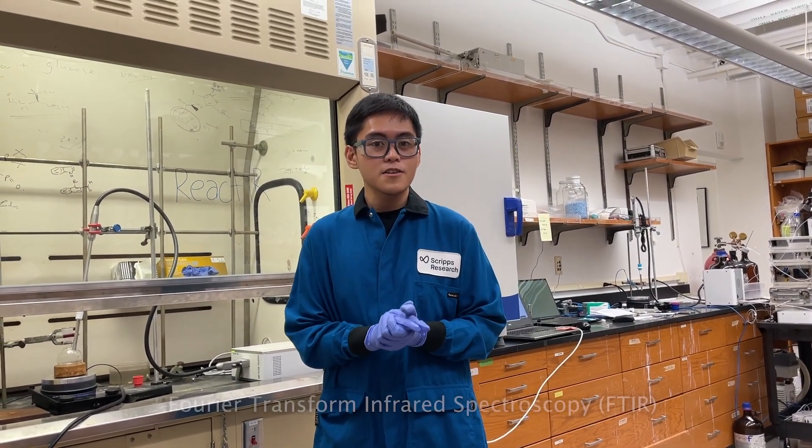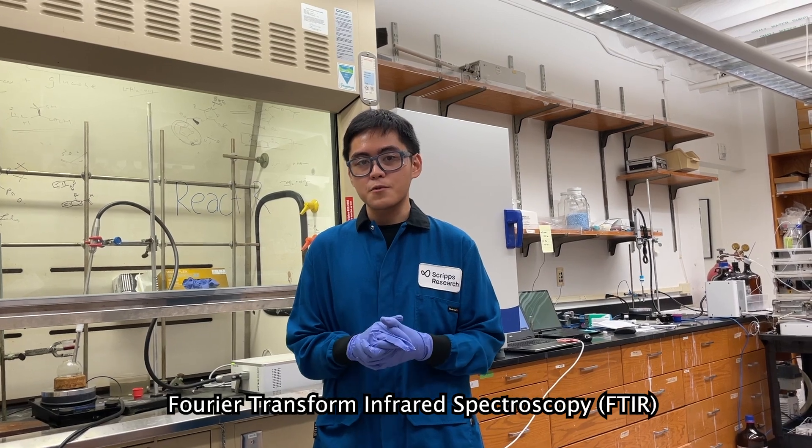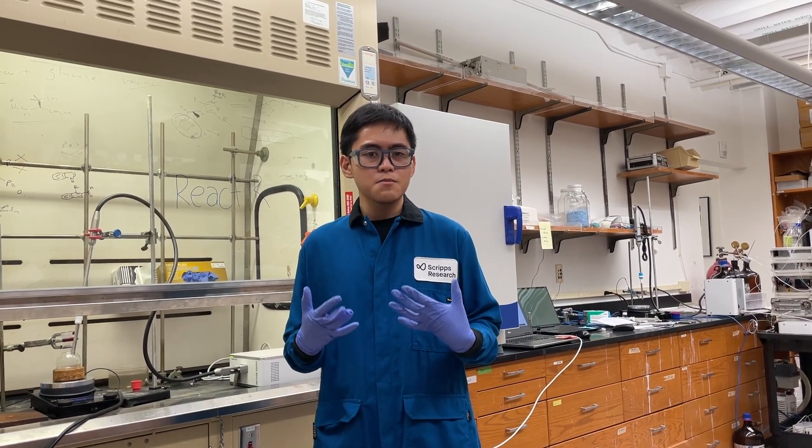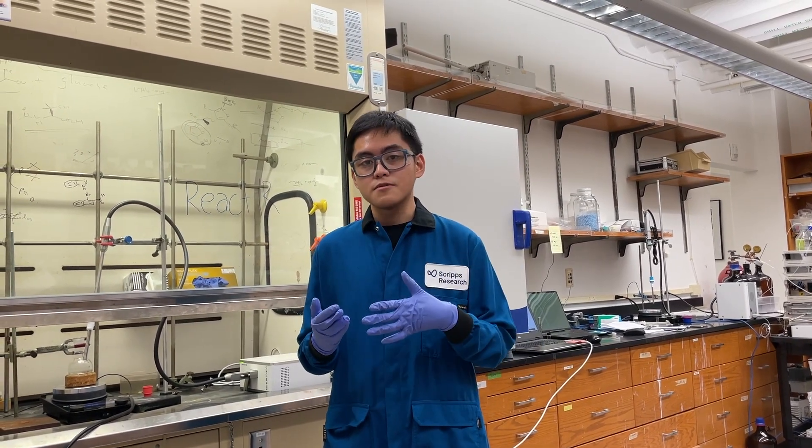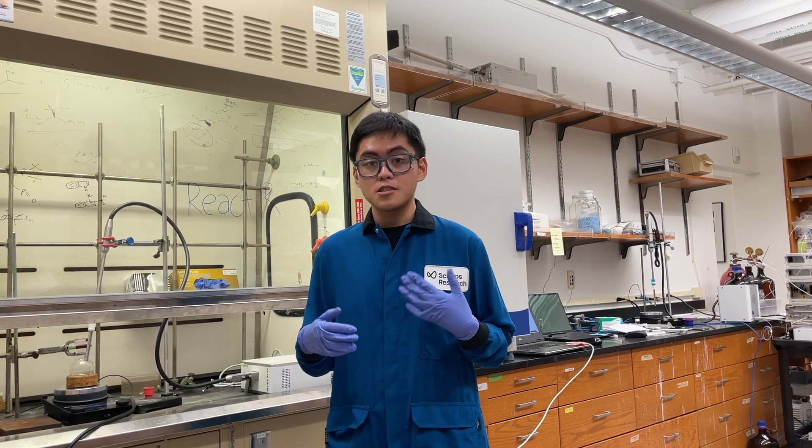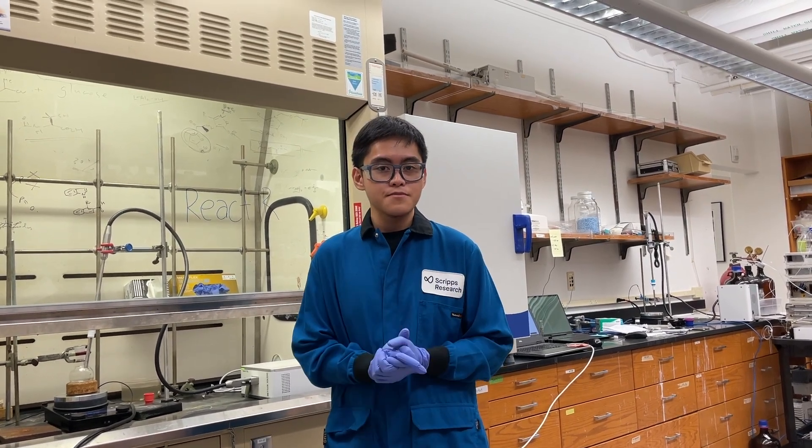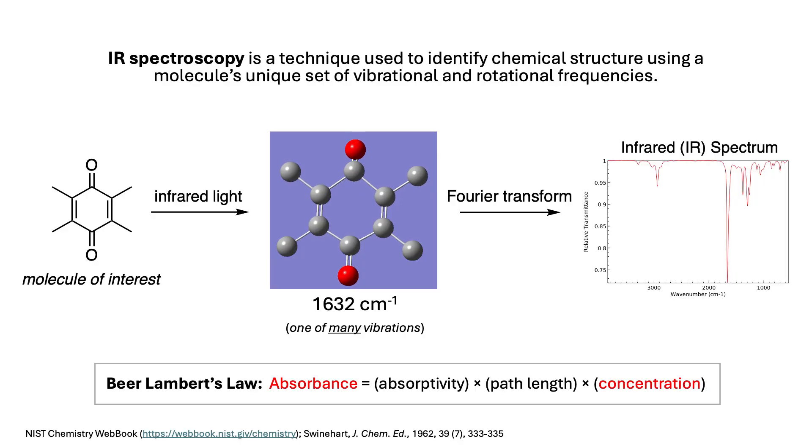Let's start with a quick refresher on how the FTIR or the Fourier Transform infrared spectroscopy works. FTIR works by passing infrared light through a sample and it also measures how much of this light is absorbed in the sample. Different molecular bonds absorb specific wavelengths of this light, creating a unique spectrum for each molecule.